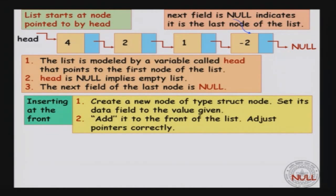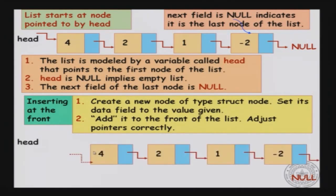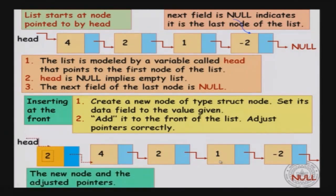Let us look at simple operations on a singly linked list. Suppose you want to insert a node at the front of the list — say the list is 4, 2, 1, -2 and we want to insert a new node. You create a new node and set its data field to the desired value. You do two operations: first, set the new node's next to the first node of the old list, then move head to point to the new node. Head was previously 4 and now moves to 2.